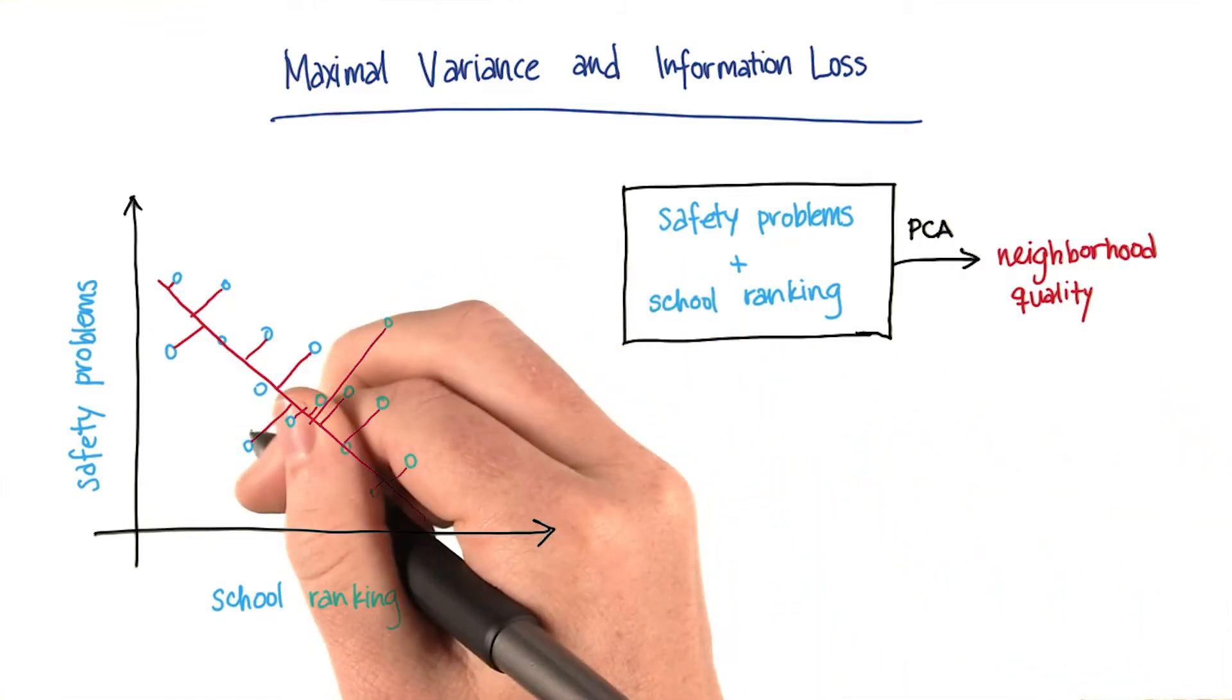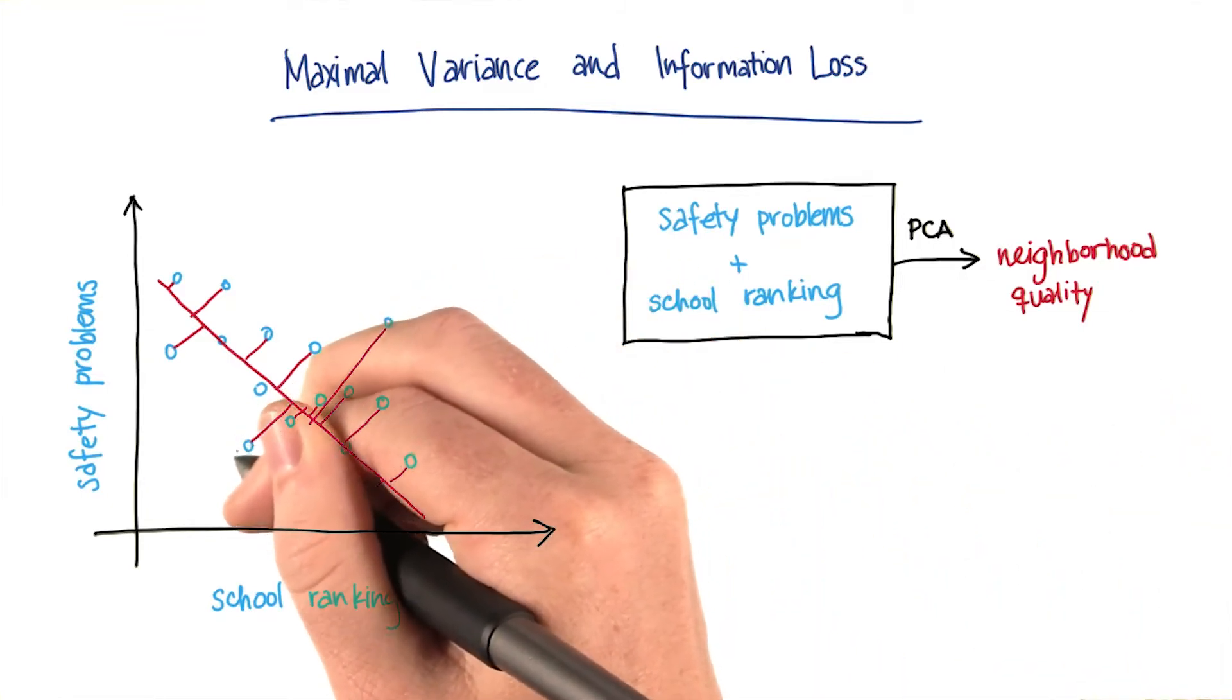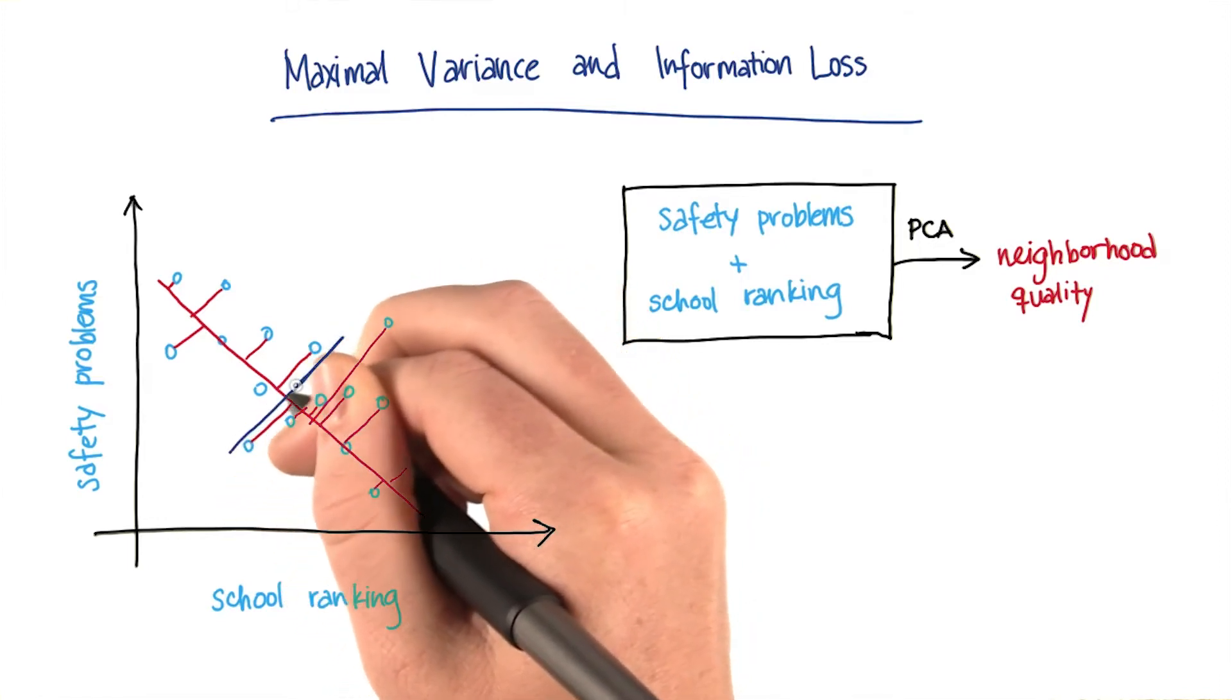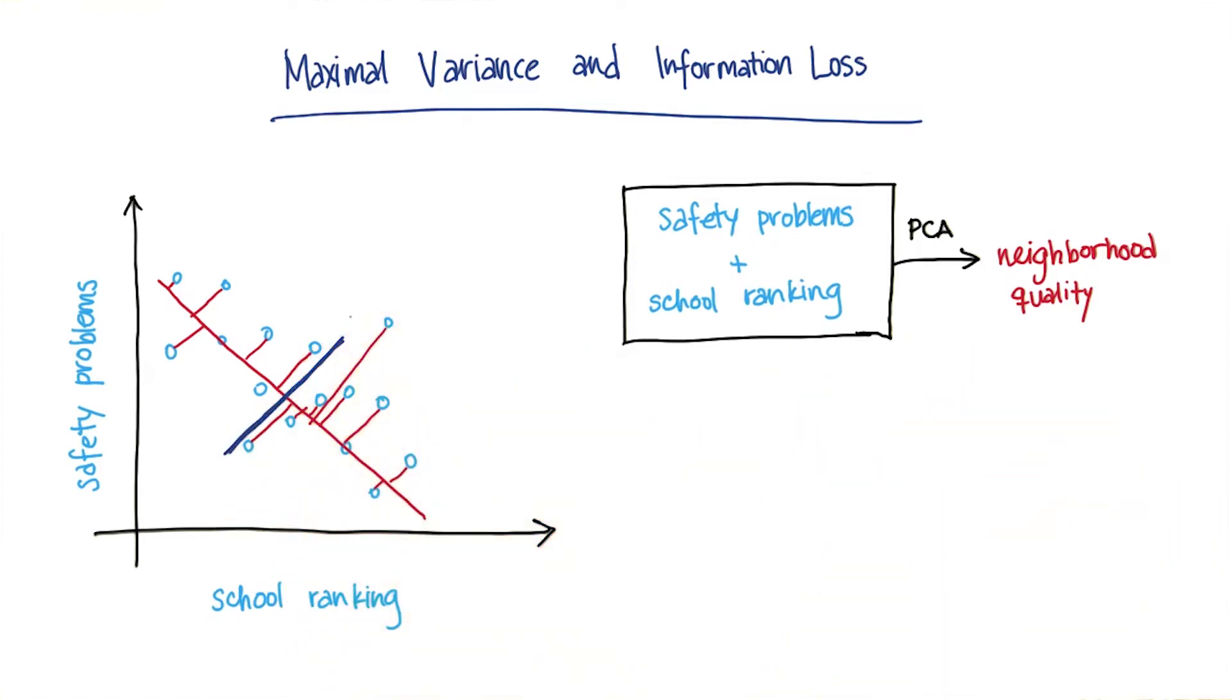And here's the key insight. Let me draw in another principal component that we could have hypothesized as the first principal component, as the one we wanted to use. Let's suppose that instead of the red line, we were looking at this purple line instead.